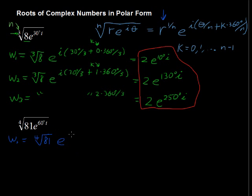Now times e to the i times 60 degrees divided by, now our n is 4. So divided by 4 plus 0 times 360 degrees divided by our n or 4. So that equals 3 times e to the, we end up with just this, the 60 degrees divided by 4 or 15 degrees i.